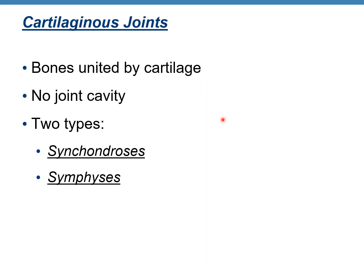The next group of joints based on structural classification is cartilaginous joints. Bones are united by cartilage, with no joint cavity — the same as fibrous joints. Two types: synchondrosis and symphysis. Both involve cartilage because these are cartilaginous joints. What type of cartilage is the difference: synchondrosis uses hyaline cartilage, and symphysis uses fibrocartilage.